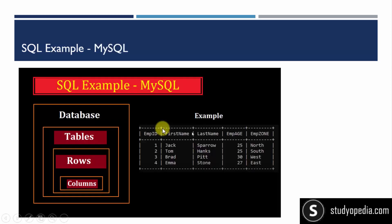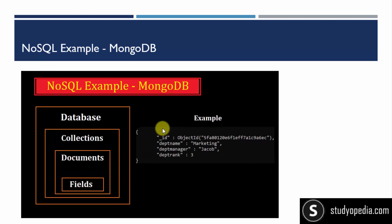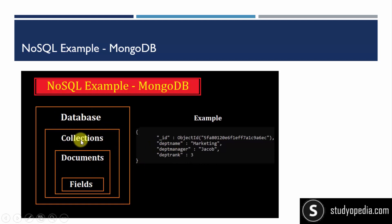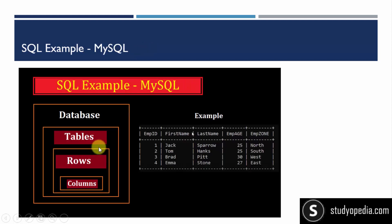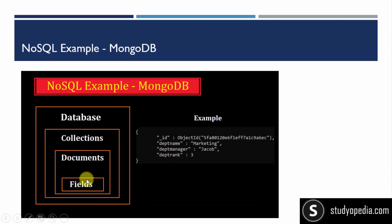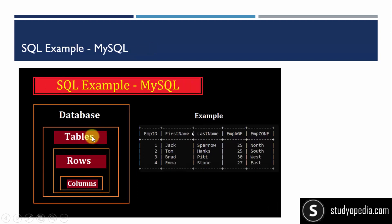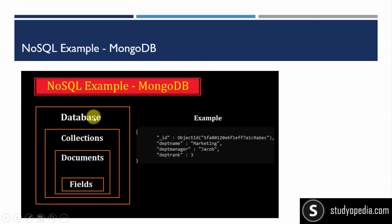That is the relational model. Now talking about MongoDB: it saves data in the form of documents and key-value pairs, which is completely different from SQL. This is the document-based MongoDB database. We have four columns here: ID, department name, department manager, and department rank. In MongoDB, documents have fields, and collections contain documents — just like tables have rows and columns in SQL. A database is a group of collections in MongoDB, the same way a database is a group of tables in SQL, but it saves data in document-based or key-value form.